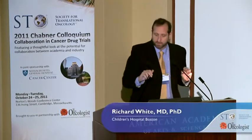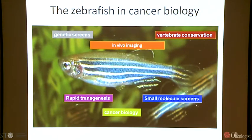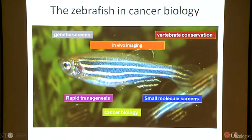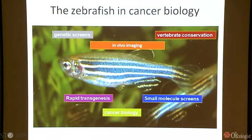I'm going to switch gears and talk about work we've done over the past several years to develop the zebrafish as a platform for cancer modeling. The zebrafish came into being as a model organism in the 60s, 70s, and early 80s, primarily because of its capacity for unbiased forward genetic screens, its excellent vertebrate conservation of gene function, and optical transparency for in vivo imaging. In the past five to ten years, what changed is our facility for doing rapid, high-throughput transgenesis and small molecule screens, both of which led to development of the model for cancer biology.